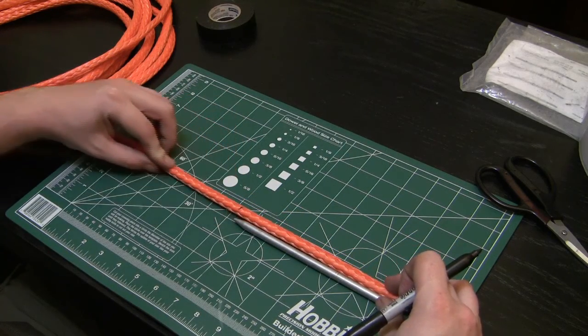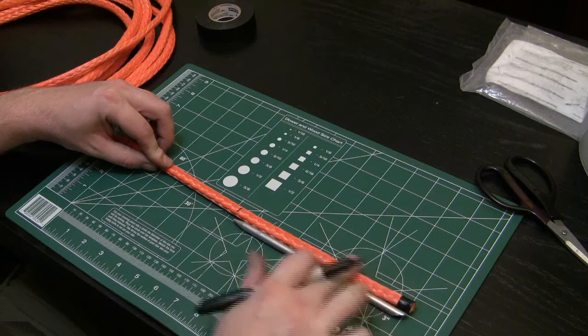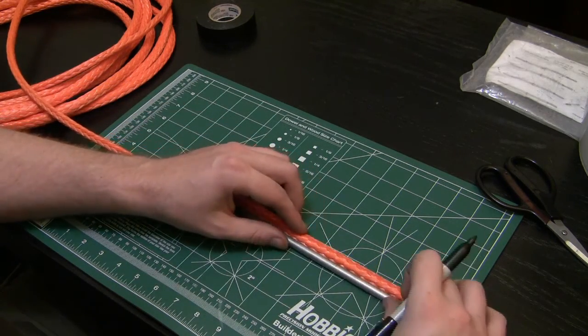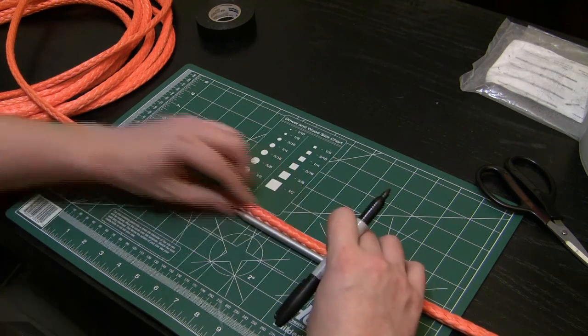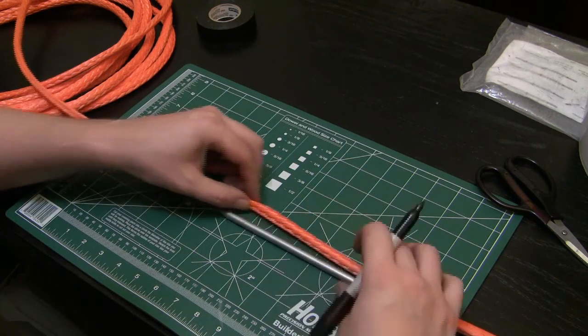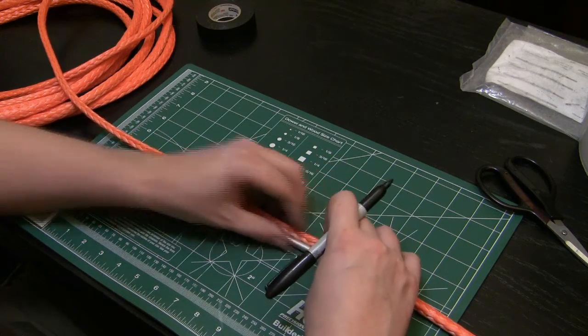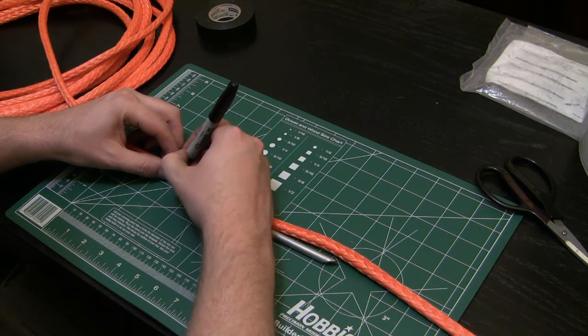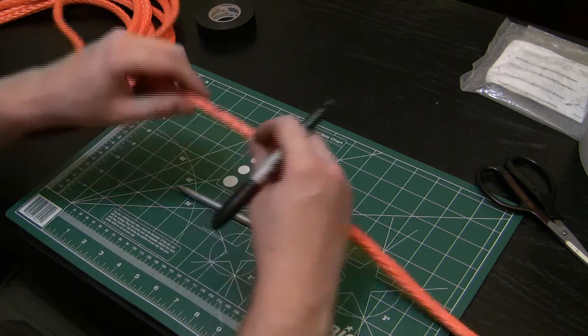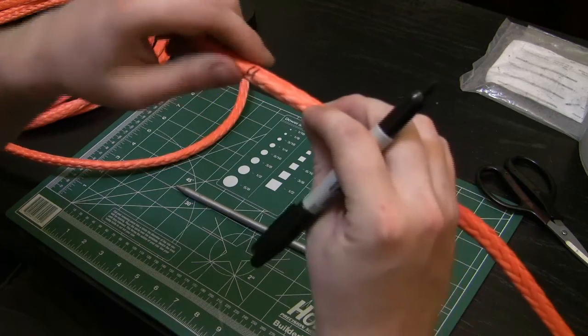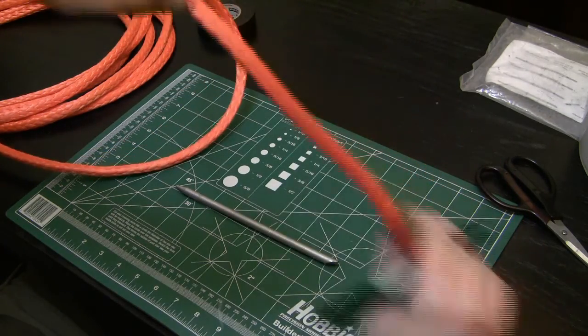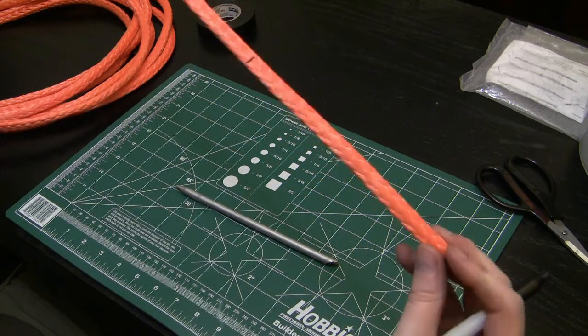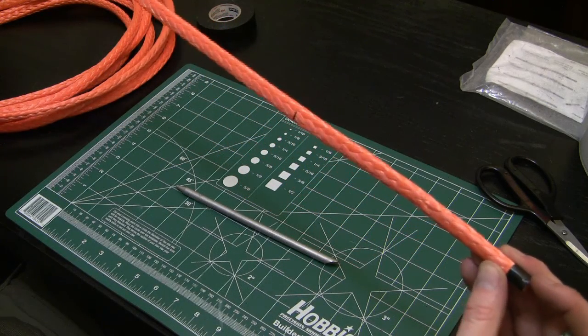This section right here is going to be our taper. Our next one will be two fid lengths, and we'll mark two and draw a line. This whole section all the way to the end is going to be the berry—that's two feet.